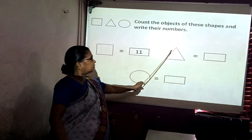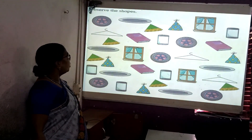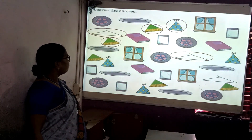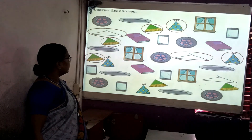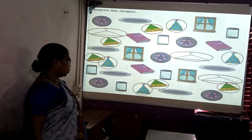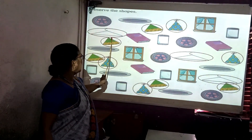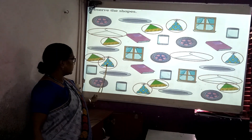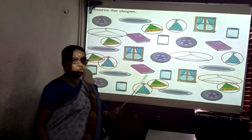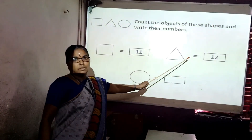Next — what is this? It is a triangle. Let us see how many triangles there are. One, two, three, four, five, six, seven, eight, nine, ten, eleven, twelve. How many triangles are there? Twelve triangles are there.